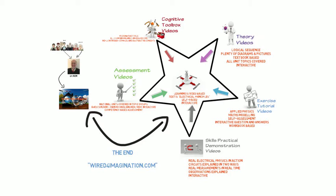So please visit Wired for Imagination, and it's spelled W-I-R-E-D, the number 4, imagination.com. Have fun learning. This has been Dr. Ken.